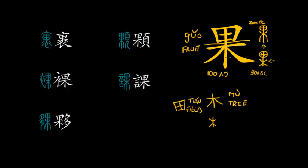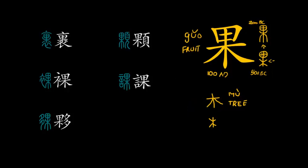As I said earlier, this character is just a graphic simplification — the top 田 (tián) has nothing to do with the field character; it is simply the fruit element that was simplified and formatted over time. So now I can go on and talk about the characters that are in this phonetic series.